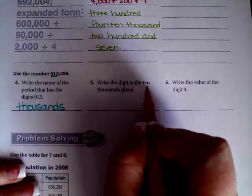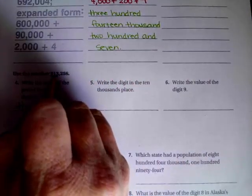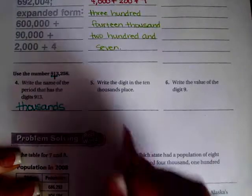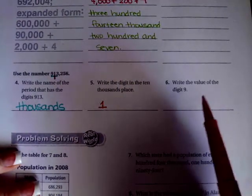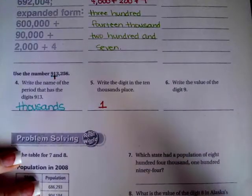Write the digit in the ten thousandth place. That's this guy, that's going to be the one. You guys go ahead and write the value of the digit nine. You guys can totally do that.